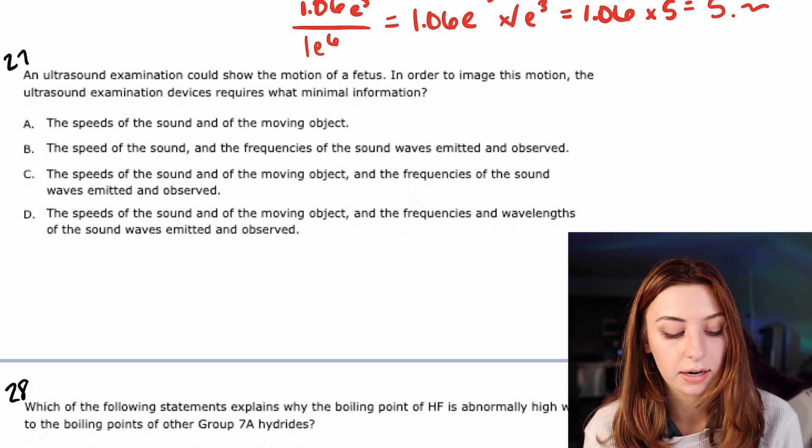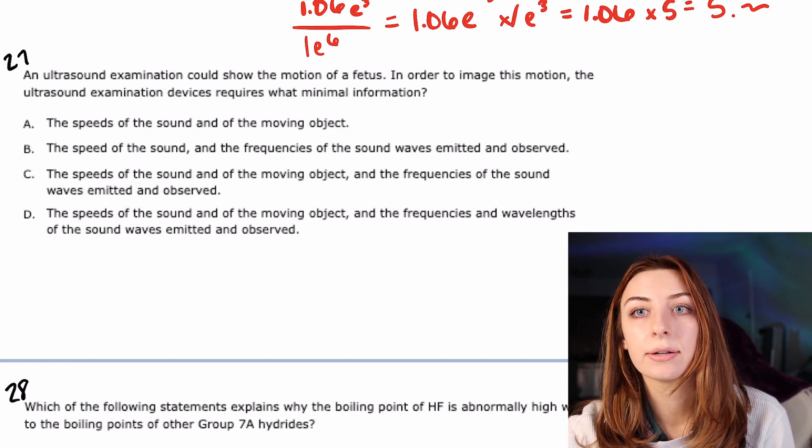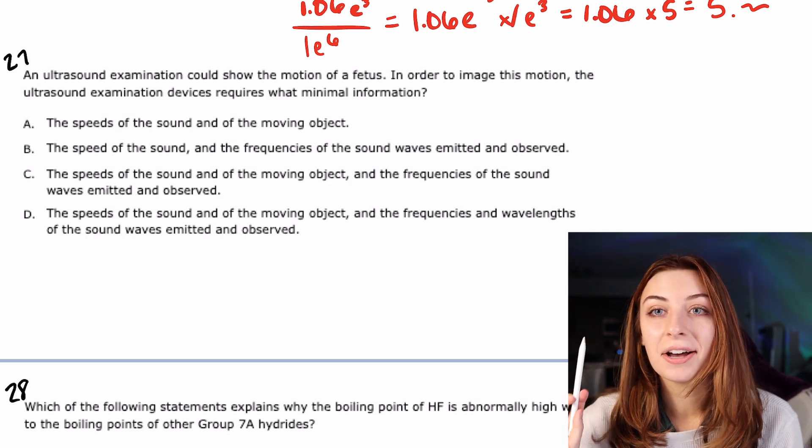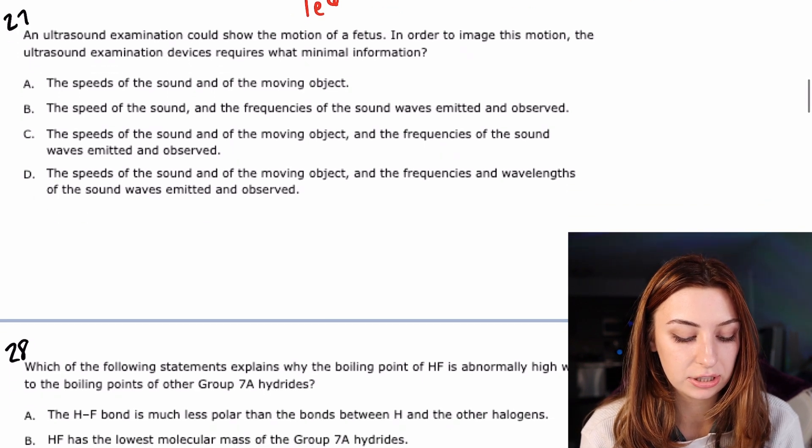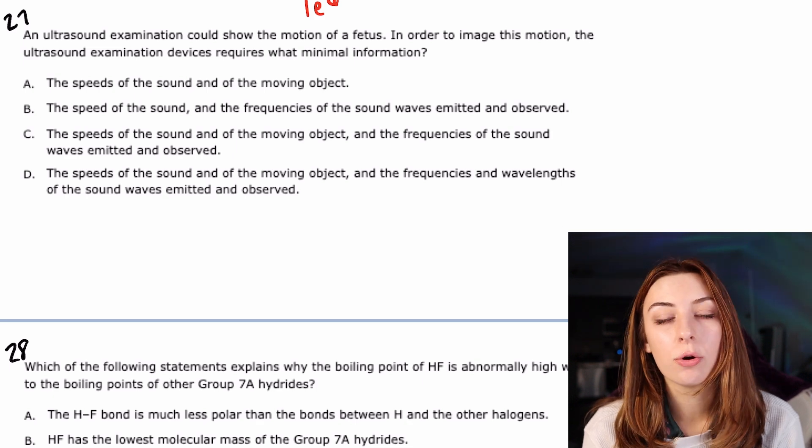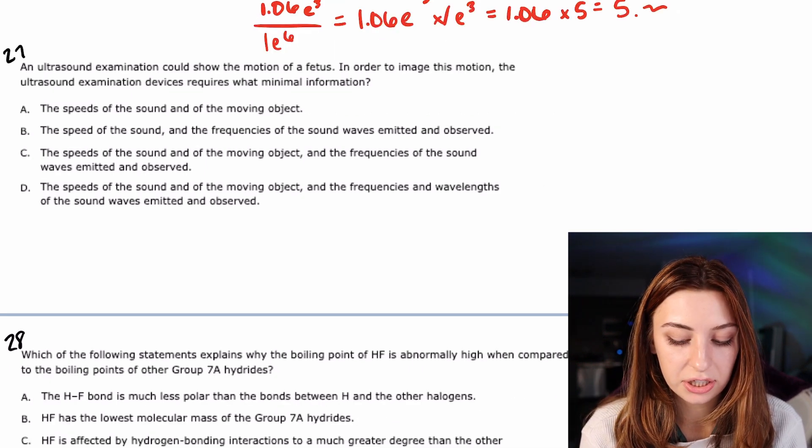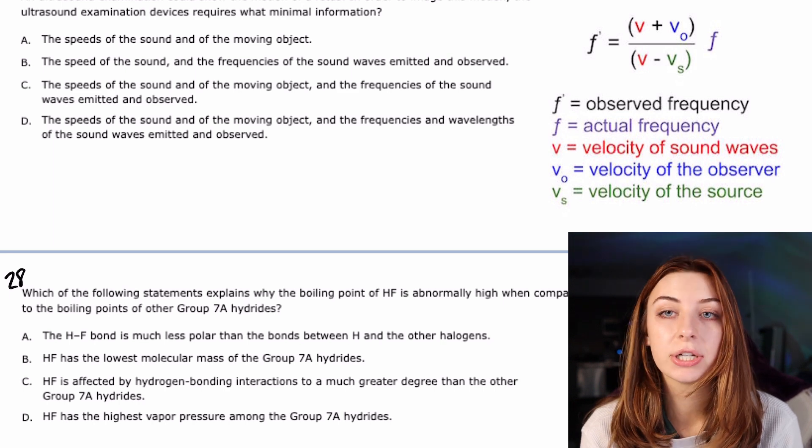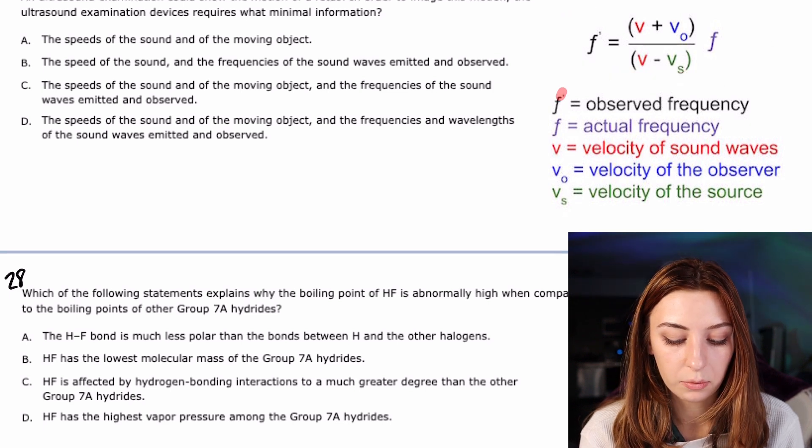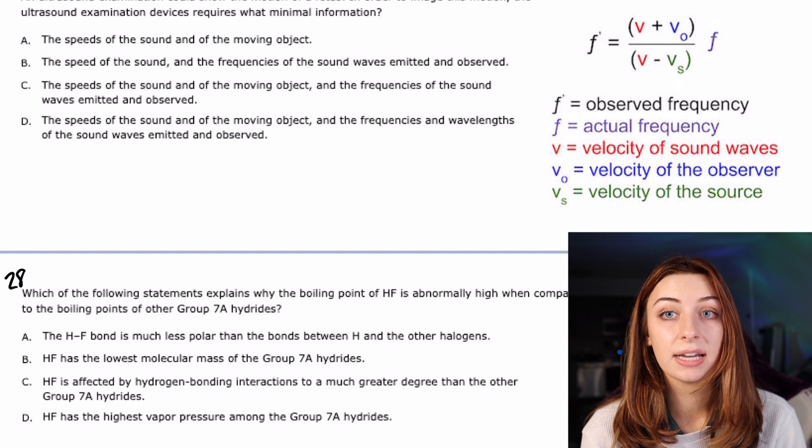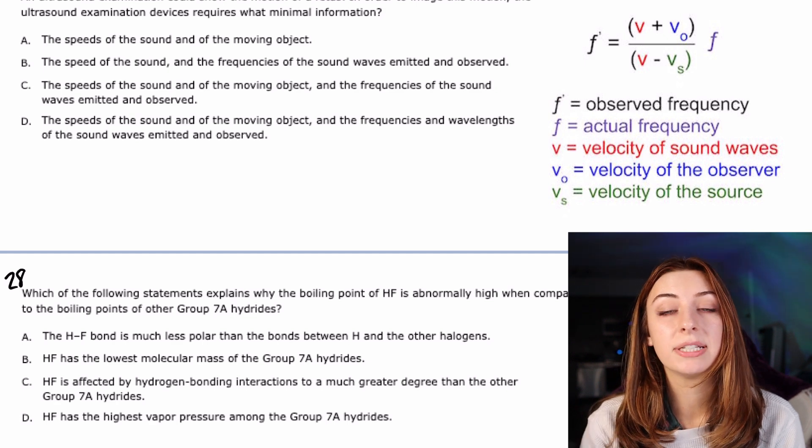Okay, I think I'll probably do the next two questions because this video is getting kind of long. So 27, this one's kind of hard. This is one of those ones that I'm like, God, this is so low yield. And I had to reteach myself this. And I think it's kind of a cheap shot. Question 27 says an ultrasound exam could show the motion of a fetus. In order to image this motion, the ultrasound examination devices requires what minimal information. This threw me off so bad when I was actually studying for the MCAT. Like I took forever learning this question, and I just took forever relearning this question. So the reason why I don't like this question is because really to know it, you kind of have to know the Doppler equation. And I just don't think you should have to know the Doppler equation on the MCAT.